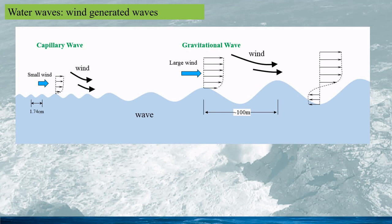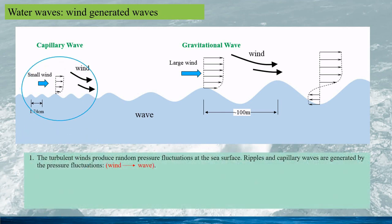It is well known that winds are the main source of ocean waves. The simple mechanism is that when the wind blows over the ocean surface, it generates waves. However, the detailed mechanism is very complicated and not fully understood yet. Generally, it is believed there are three stages for the establishment of ocean waves. The first stage is that turbulent winds produce a random pressure fluctuation at the sea surface, thus generating ripples — or, more technically, capillary waves.